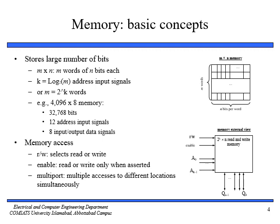Let's start by describing some basic memory concepts. A memory stores a large number of bits. These bits can be viewed as M words of N bits each, so we refer to memory as an M-by-N memory. The horizontal lines in the figure represent words, whereas the vertical lines represent bits. The lower figure shows the external view — this is how a memory looks from outside.